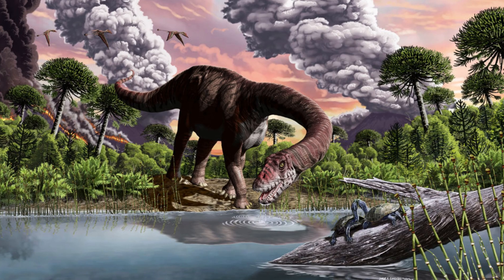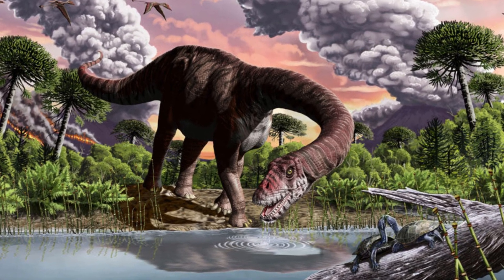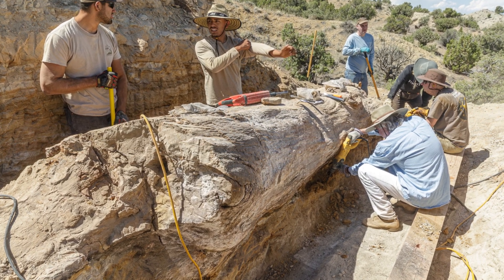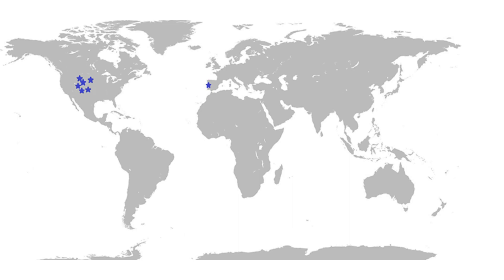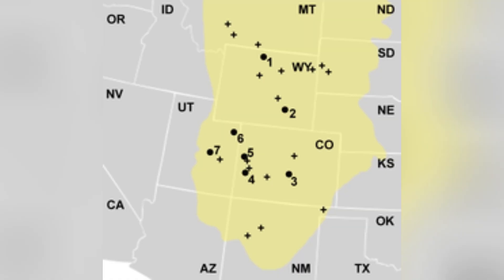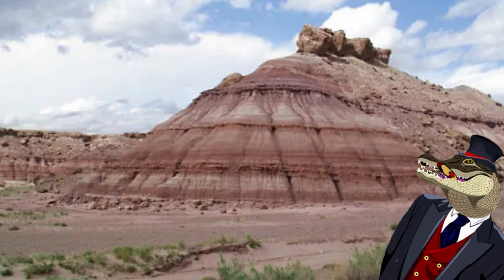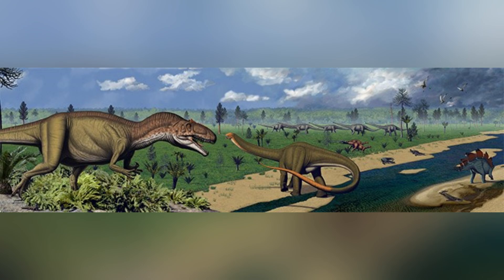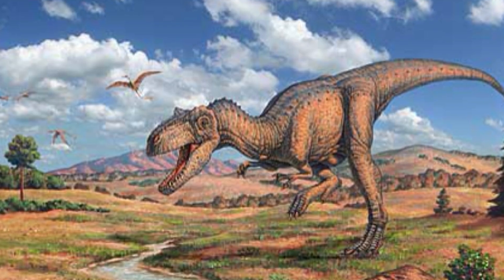Distribution and habitat were influenced by the geological and environmental conditions of the time. Allosaurus fossils have been found primarily in Western North America, including the now United States, but also in parts of Europe, particularly Portugal. Some of the known American states where Allosaurus fossils have been discovered include Utah, Colorado, Wyoming, Montana, and Oklahoma. These fossils are often associated with rocks from the Morrison Formation, a geological unit known for its rich assemblage of late Jurassic dinosaurs. During the late Jurassic, the habitat was characterized by open floodplains, river systems, and forested areas.